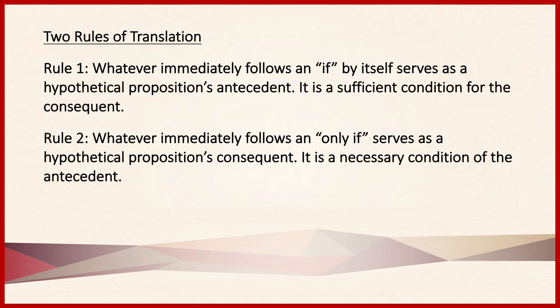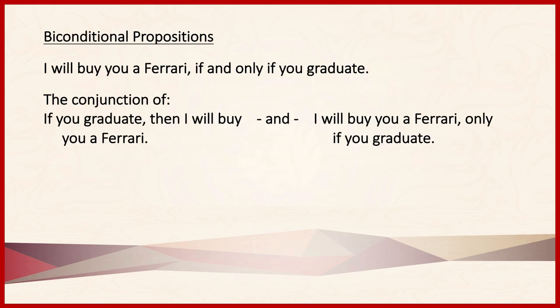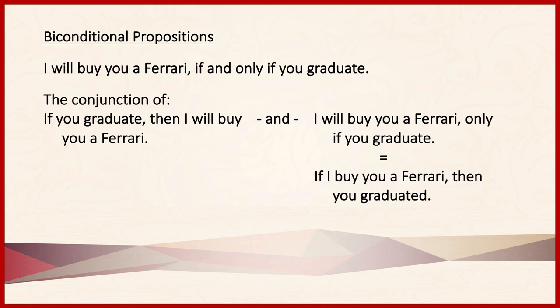Now, let's consider what role all of this plays in biconditional propositions. Here's an example: I will buy you a Ferrari if and only if you graduate. Note that this proposition is the conjunction of two separate statements: first, if you graduate, then I will buy you a Ferrari; and second, I will buy you a Ferrari only if you graduate. The second proposition contains 'only if,' and as we've seen, it can be translated as: if I buy you a Ferrari, then you graduated.